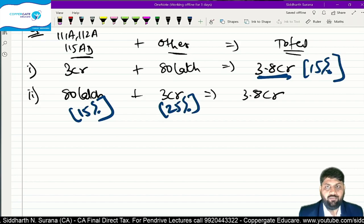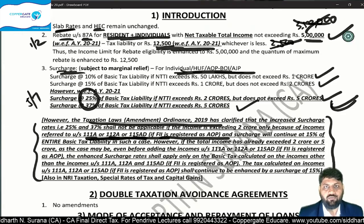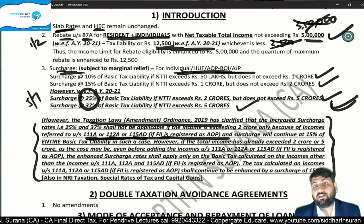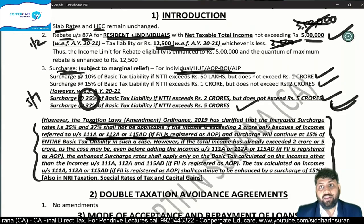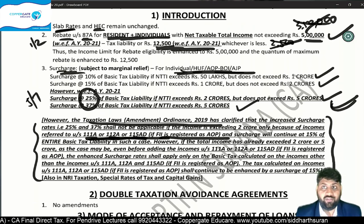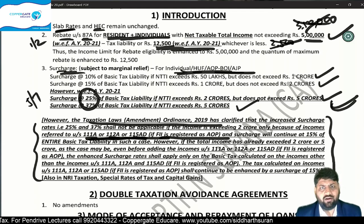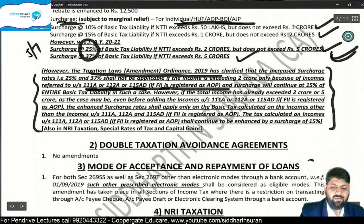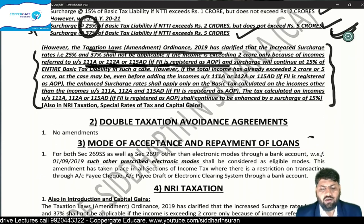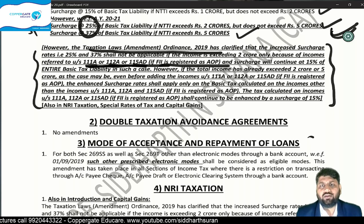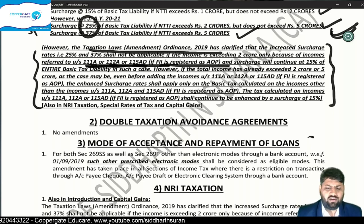These were the amendments from the first chapter — rebate and surcharge saw heavy amendments and took substantial time. But there are many chapters where not a single amendment came. For example, double taxation relief — not a single amendment. Whatever the unilateral or bilateral rules were, they continue unchanged.